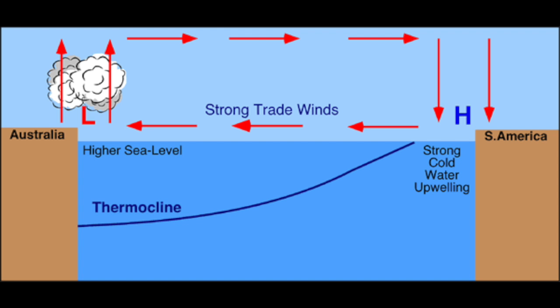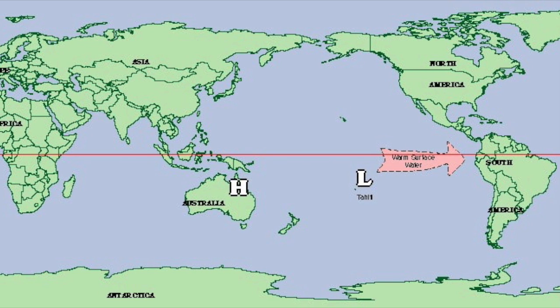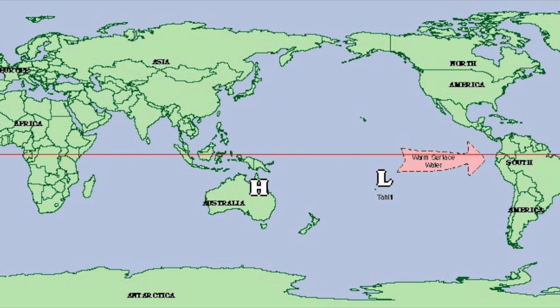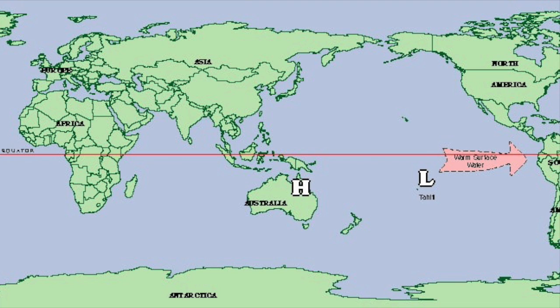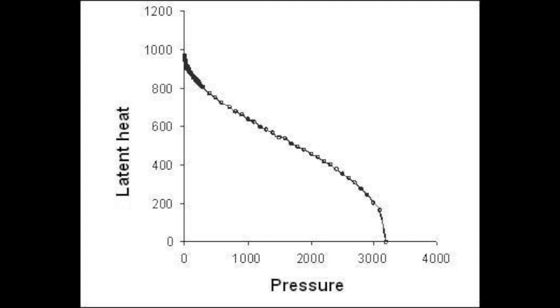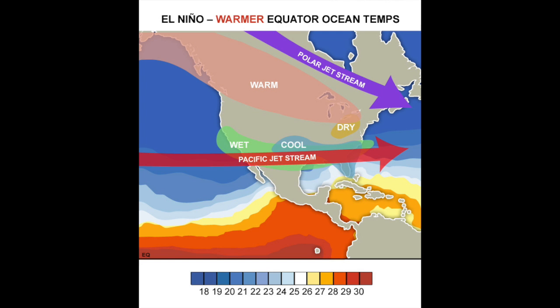El Niño occurs with the Southern Oscillation, which is an atmospheric change in pressure over the tropical west and east Pacific Ocean. When the coastal waters warm in the eastern tropical Pacific, atmospheric pressure decreases. Pressures increase in the western Pacific Ocean. Latent heat from condensation warms the air and decreases the atmospheric pressure in the east Pacific Ocean. When El Niño is occurring, warm air is lifted into the high atmosphere, disrupting the jet stream.